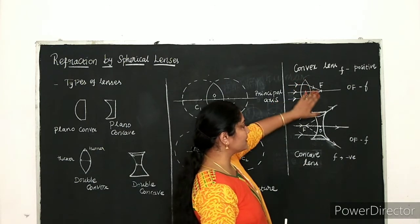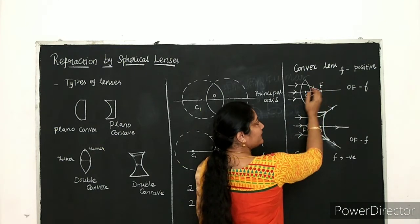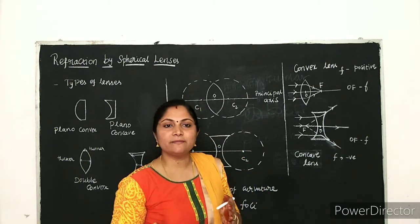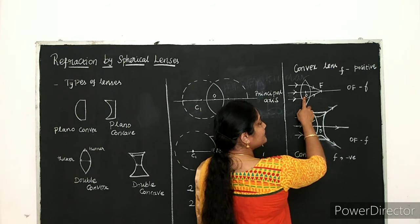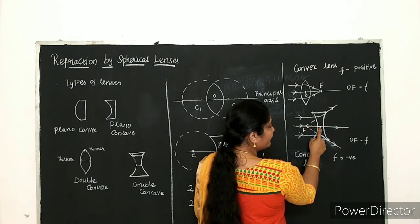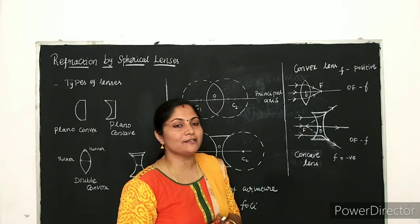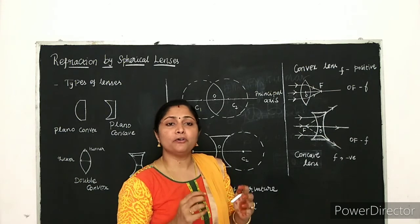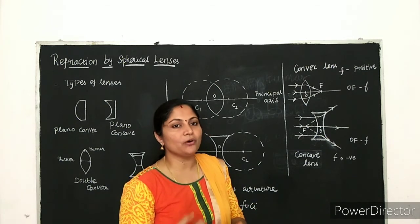So the convex lens is a converging lens and the concave lens is a diverging lens. The principal focus is on the opposite side from where the light comes. The distance between the optical center and the principal focus is said to be the focal length. The focal length to the right side of the lens is positive, so a convex or converging lens has a positive focal length. If the focal length is negative, the lens is a concave or diverging lens.